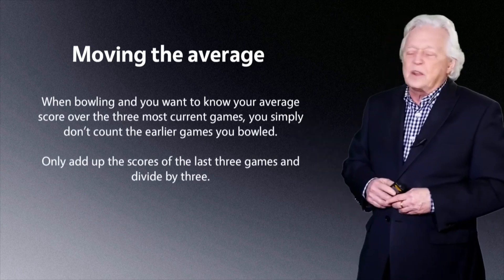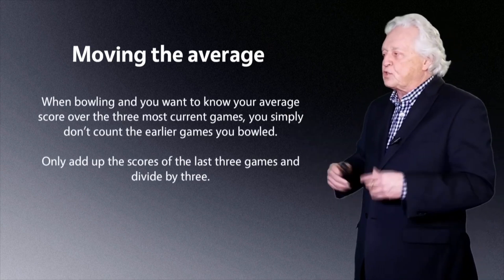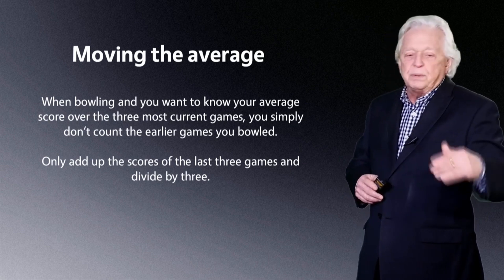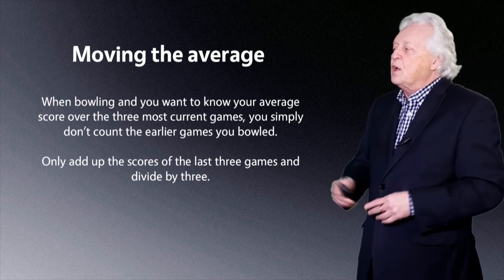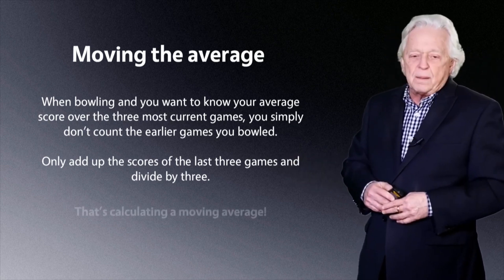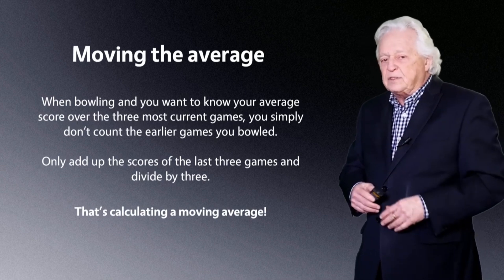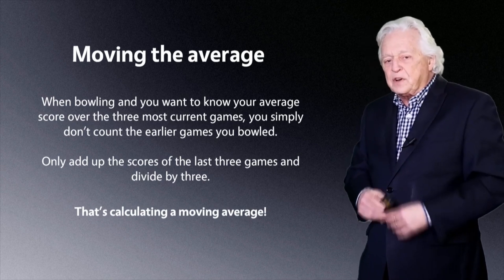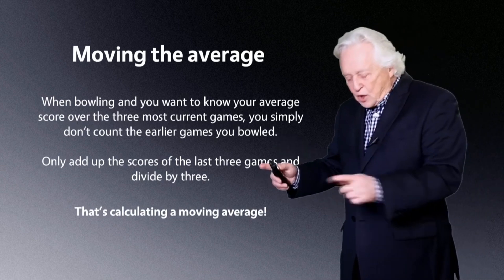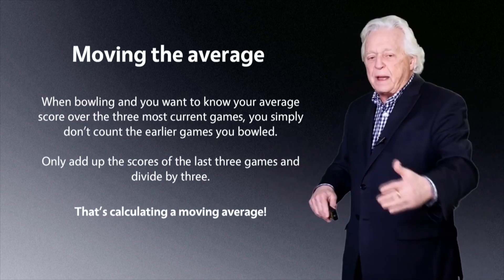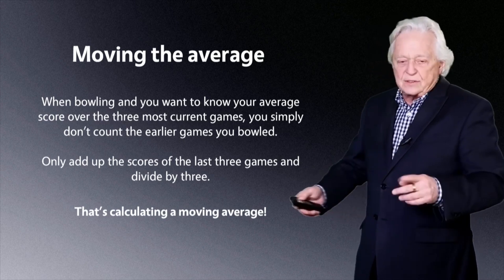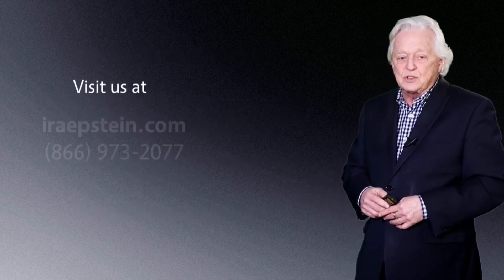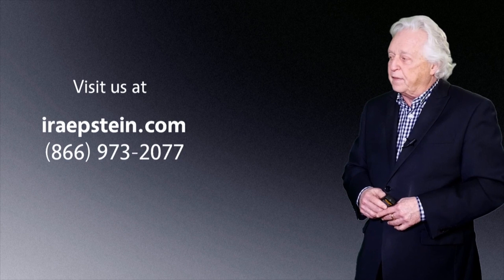When bowling and you want to know your average score of the last three games, you simply don't count the furthest game out — you only add up the last three. If you're doing an 18-day average of closes, it's the current quote right now plus the past 17 closes. That's how you calculate a moving average. It's really not much more difficult than that.